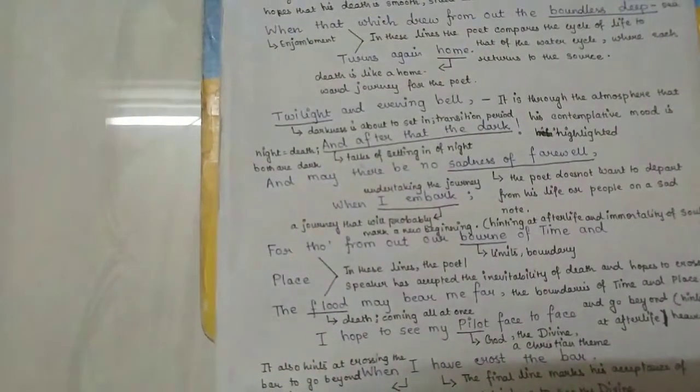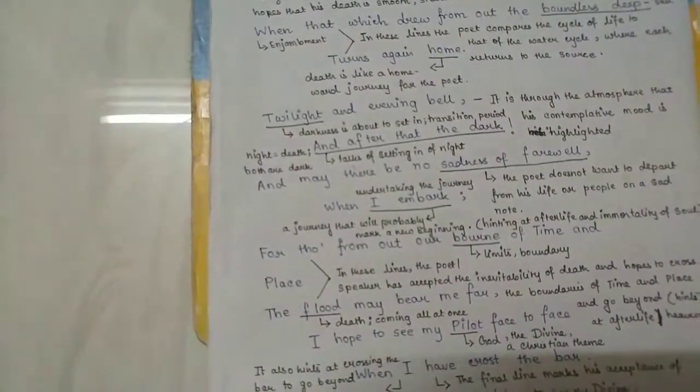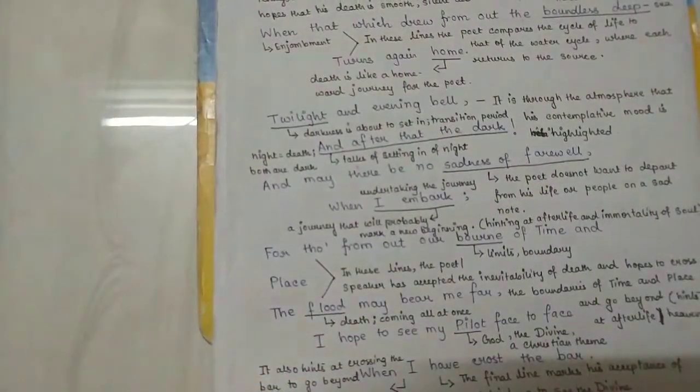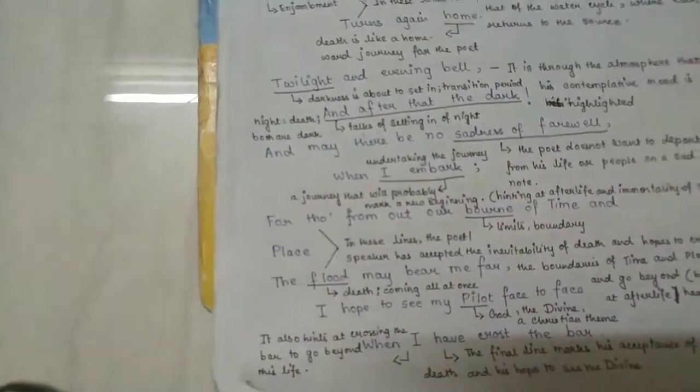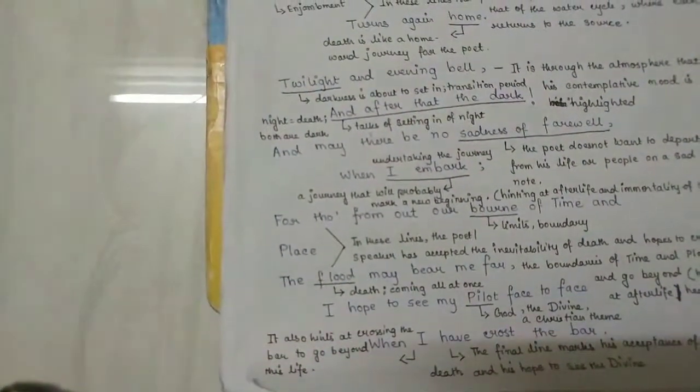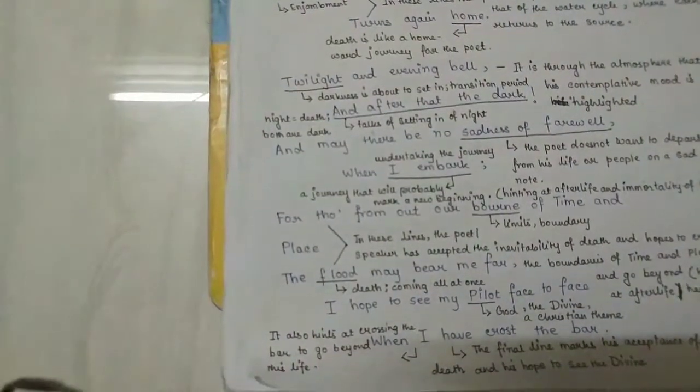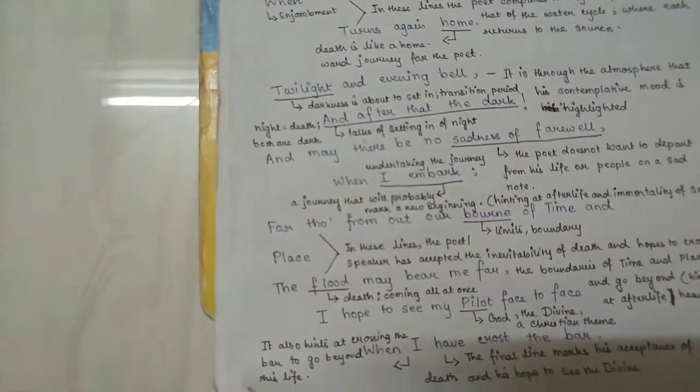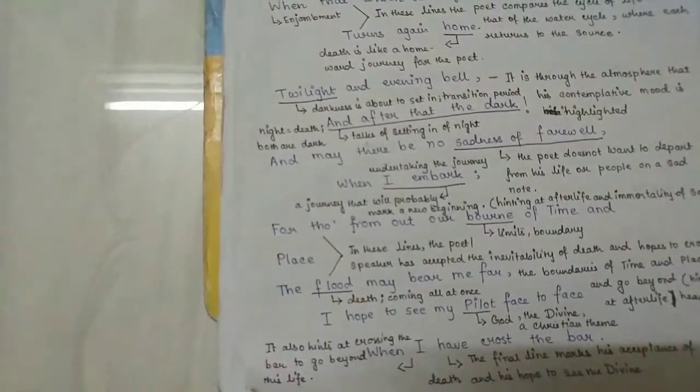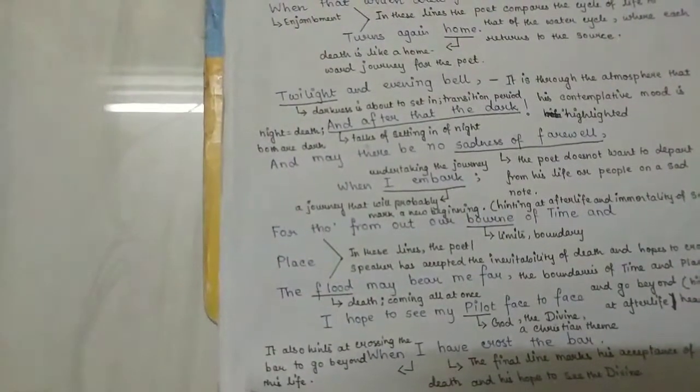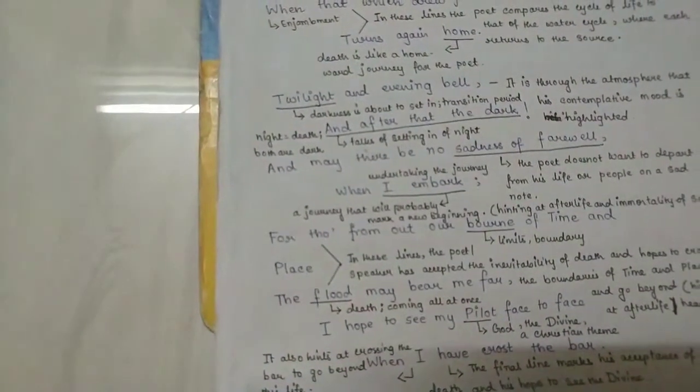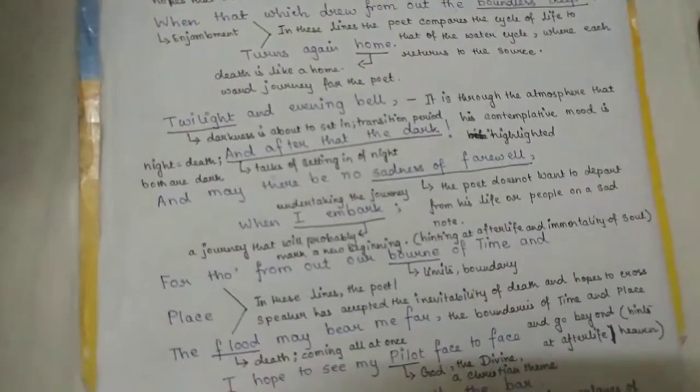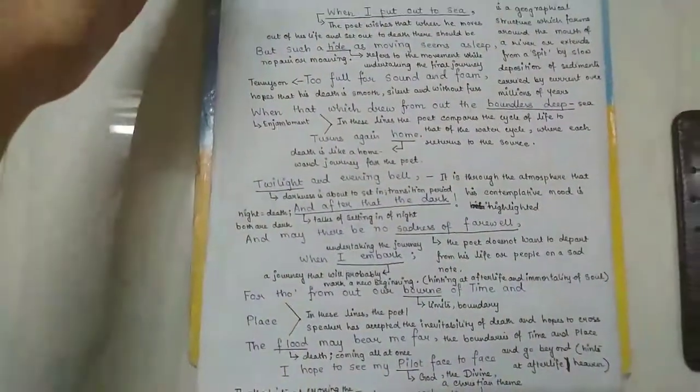The boundless deep in the poem refers to the sea. Here the poet has used allegory. The poet believes he will go after his death into this boundless sea, the sea where the depth cannot be measured, the immeasurable depth. This final line, turns again home, completes the entire cycle of the poem's first part, equal to where Tennyson talks of the water cycle, which is again compared to the life cycle.